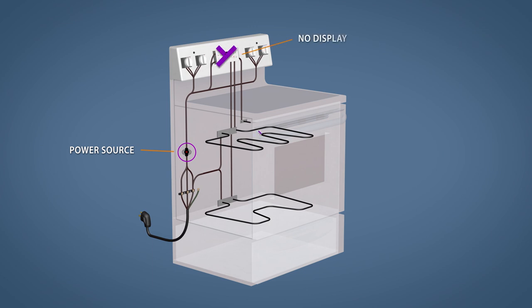In some ovens the limit switch is wired between the power source and the control board. So a faulty switch will cut power to both the display and the elements.